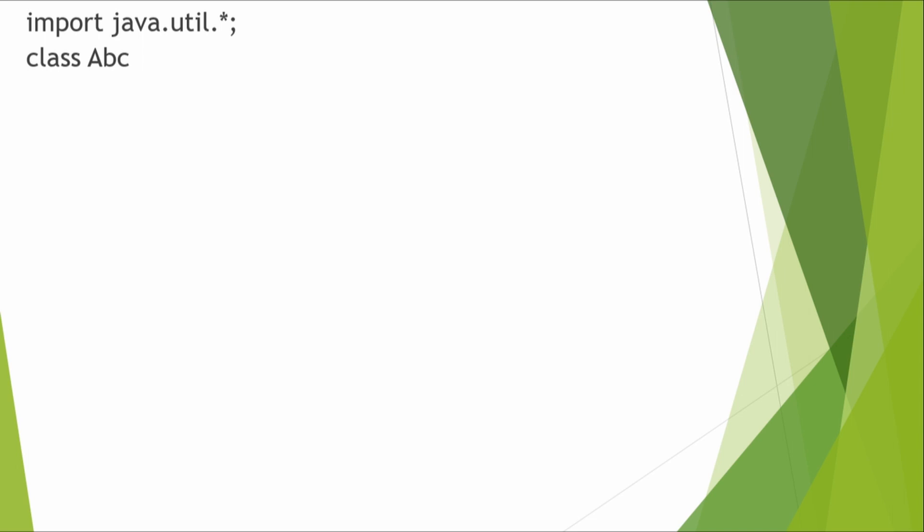The class will hold the whole program — we are going to write all the code inside this class only, which is why class is also known as the frame of the program. In Java, we write statements inside curly brackets, also known as a block. Whatever set of statements we write goes inside these curly brackets. We open and close them — this open and close part is known as a block. So we write the program inside the class block. ABC here is an identifier — the name of anything. So ABC is the identifier, or class name.